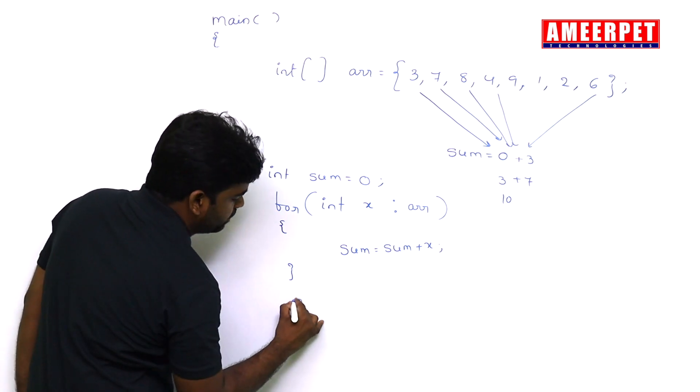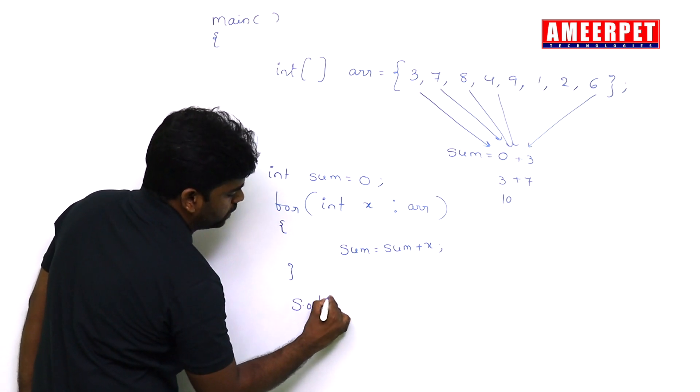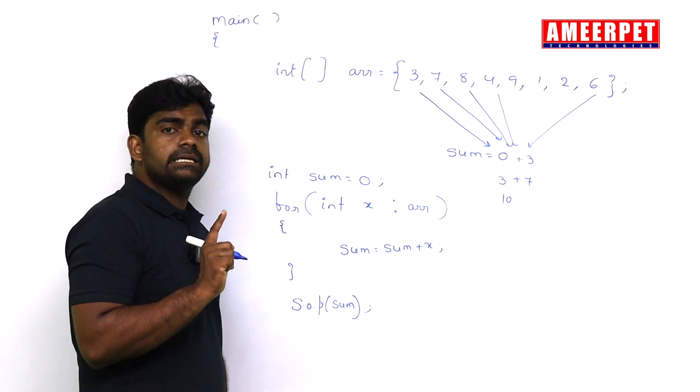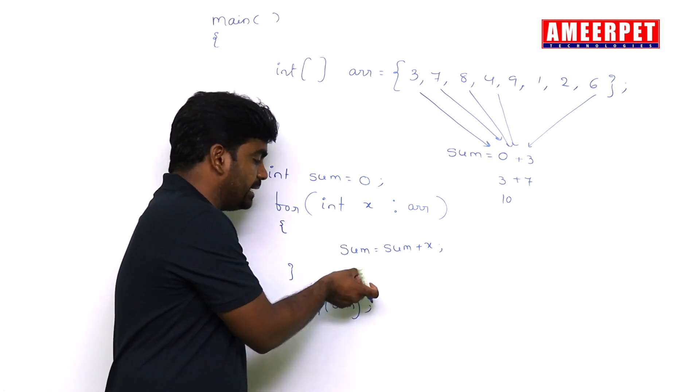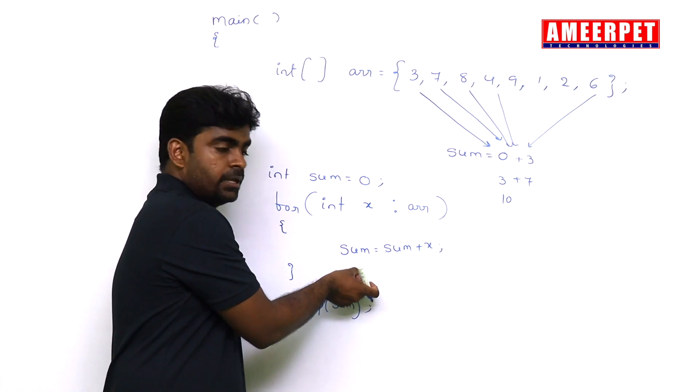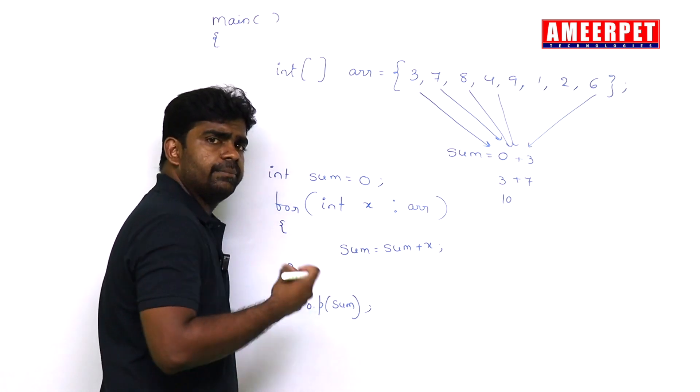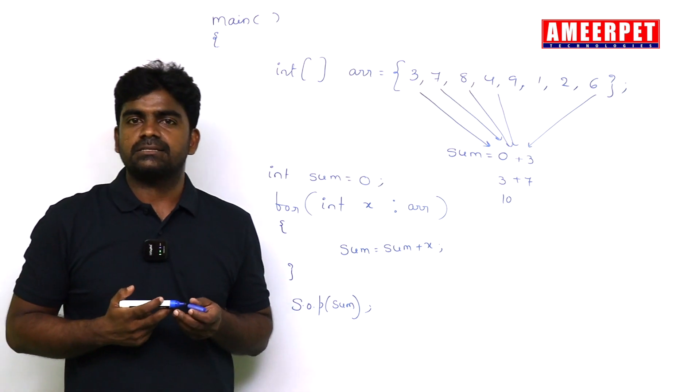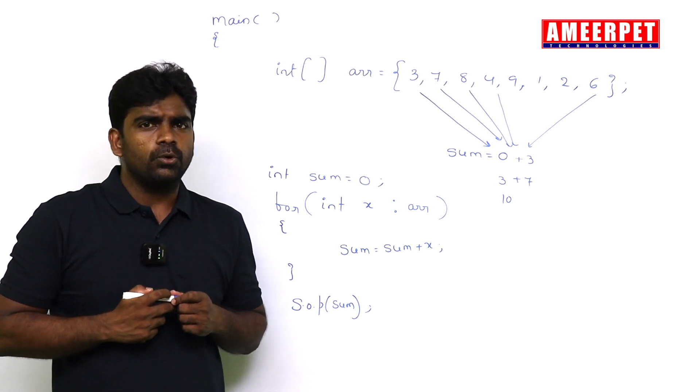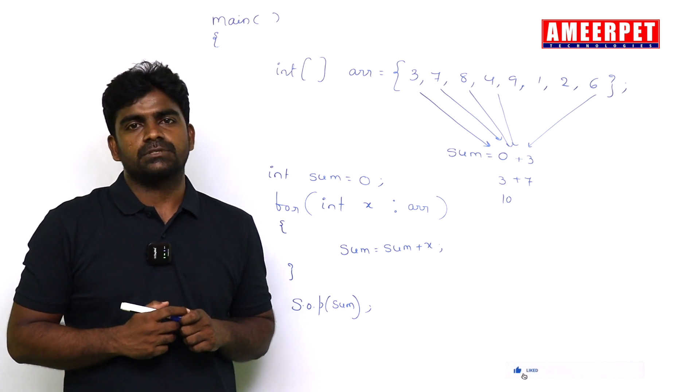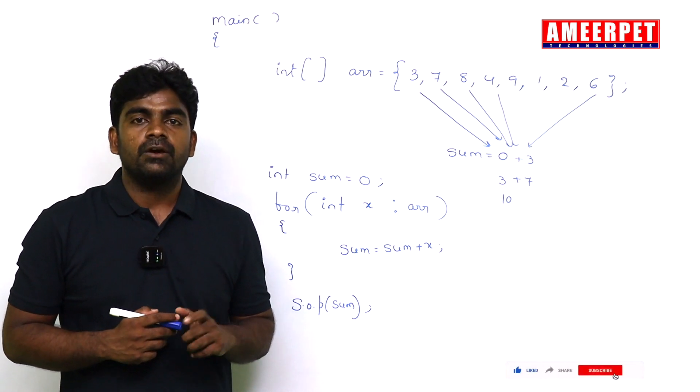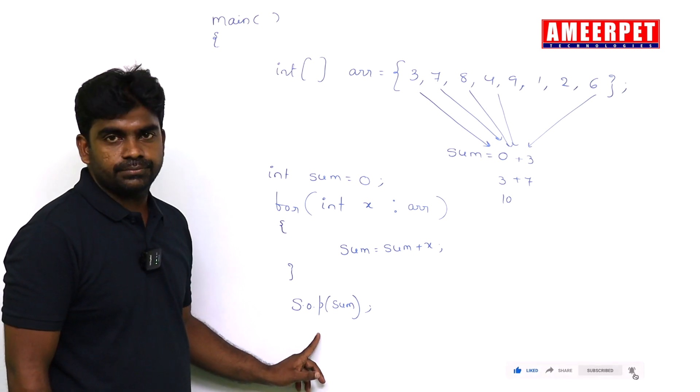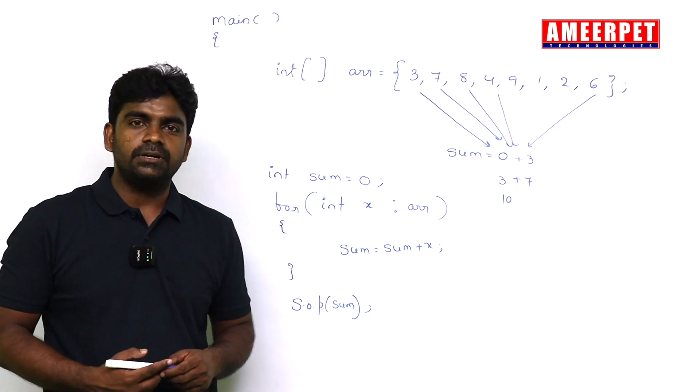Then finally we are printing System.out.println sum value. One very important point is: please don't print sum inside this loop. If you write inside, every time it is printing the sum. How many times it will repeat, those many times you will get the sum. Do we need to print only one time or multiple times? We need to print only one time. That's why print outside of the loop. Okay, hope you understood. Thank you.